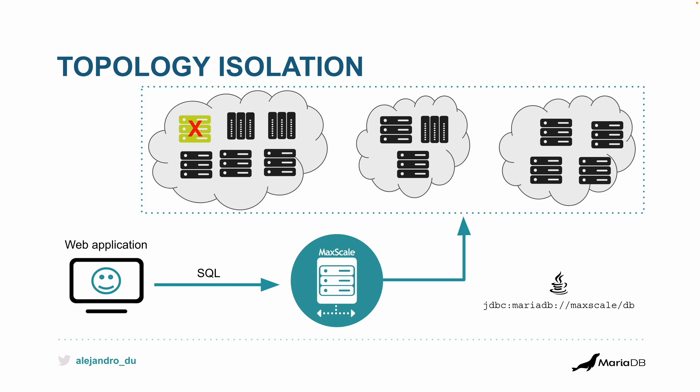So things can fail. When the primary node fails, MaxScale can pick another one and promote it as the new primary. The application can continue to write data to the database with no problem. Maybe there's reduced capacity, but if planned carefully, it's not even noticeable — the web application and the user don't notice any decrease in performance.